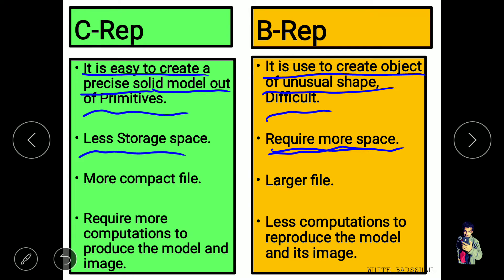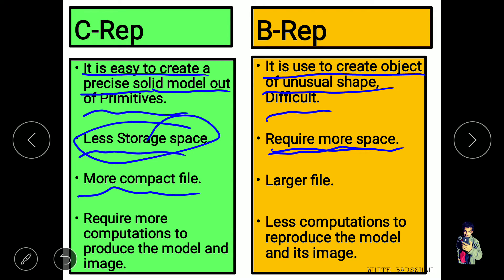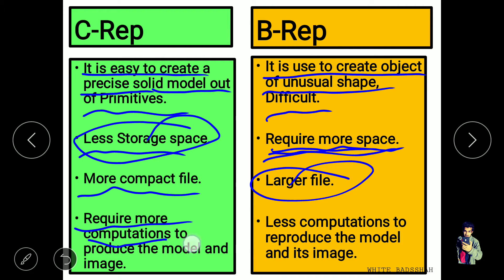In CSG, because less storage space is required, the file is more compact. In B-Rep, the files are larger because it requires more space. In CSG, it requires more computation to produce the model and the image because there are a number of boolean operations involved. But in B-Rep, it requires less computation to reproduce the model and its image.